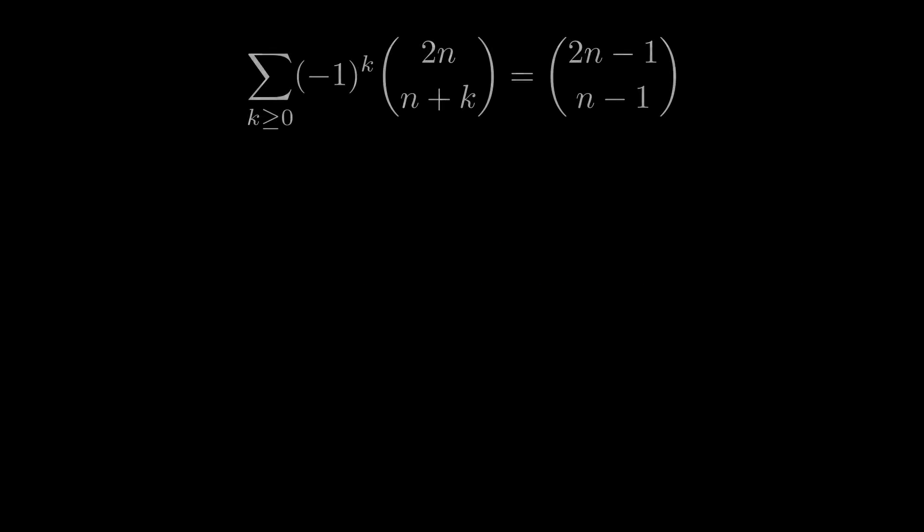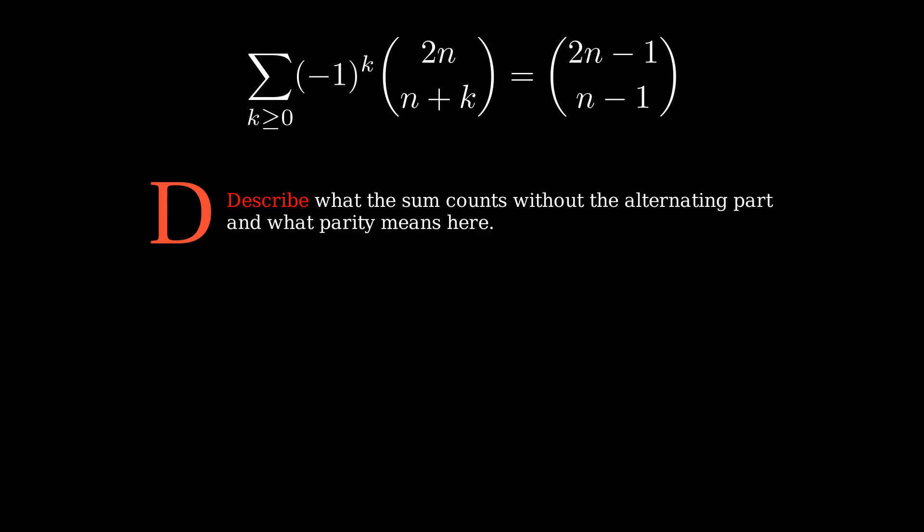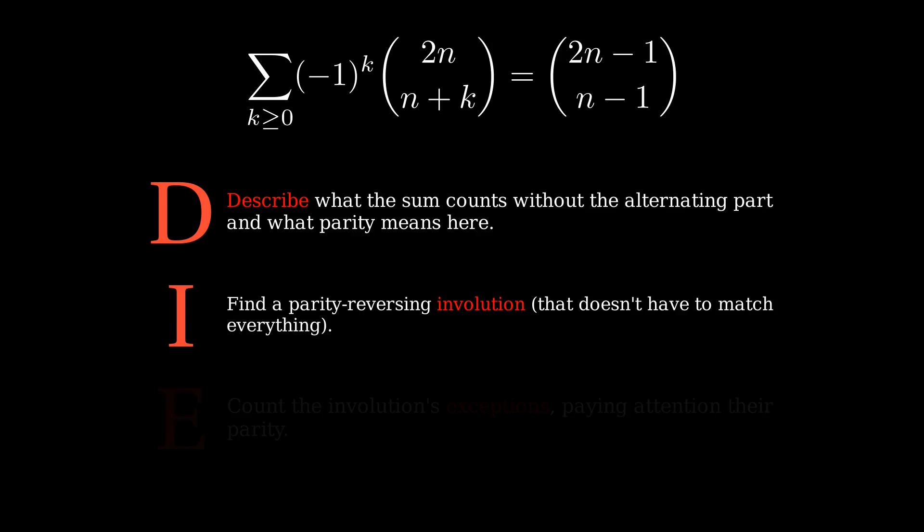Let's go back to that frightening identity from the beginning. Yeah, that's the one. Our general strategy comes in three phases. Phase D, description. Describe what the sum counts without the alternating part, and figure out what parity means here. Phase I, involution. Find a parity reversing involution. Remember, it doesn't have to match up everything. Because of phase E, exceptions. Count the involution's exceptions, paying close attention to their parity. Alright, time to face our fears.